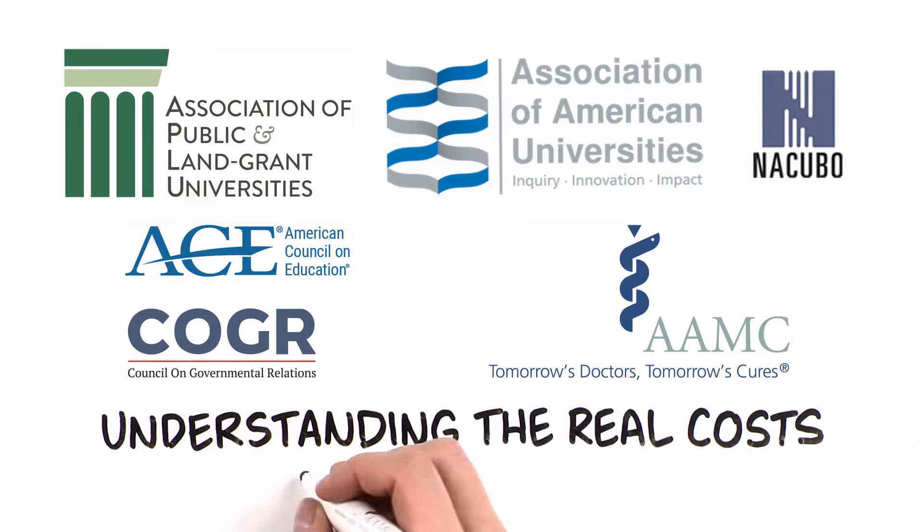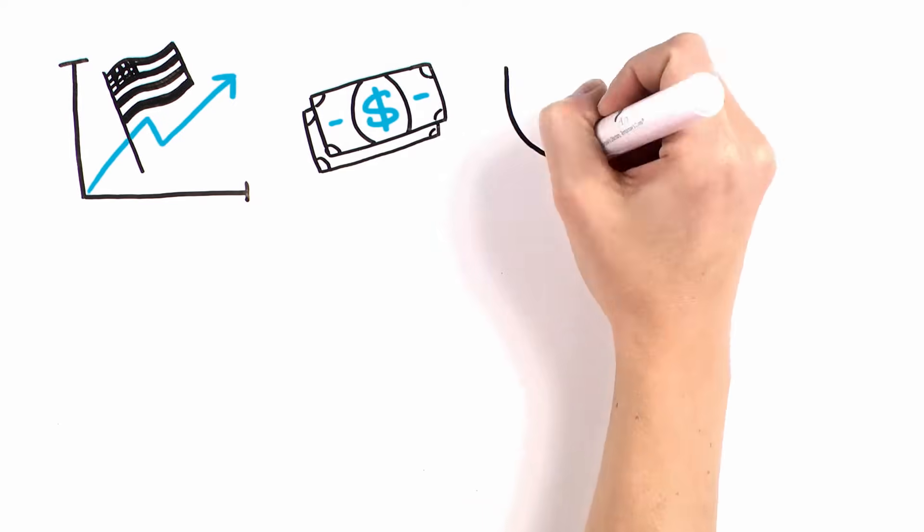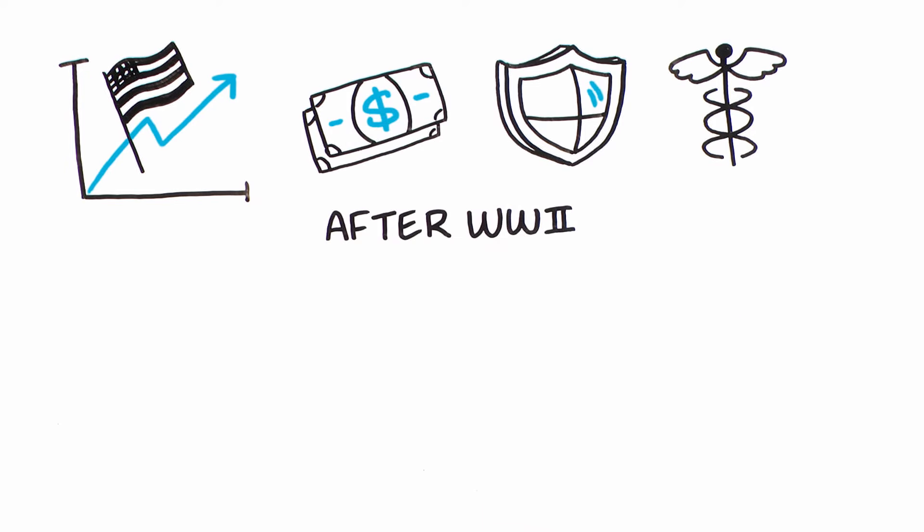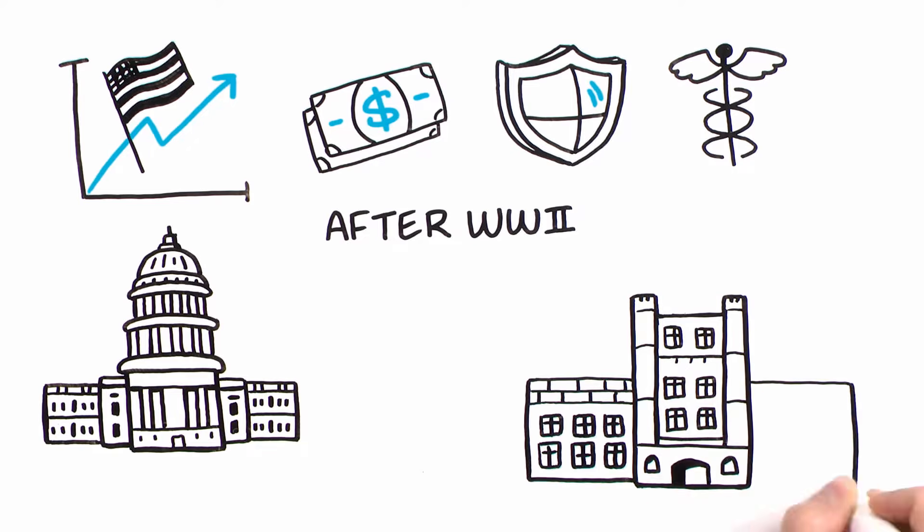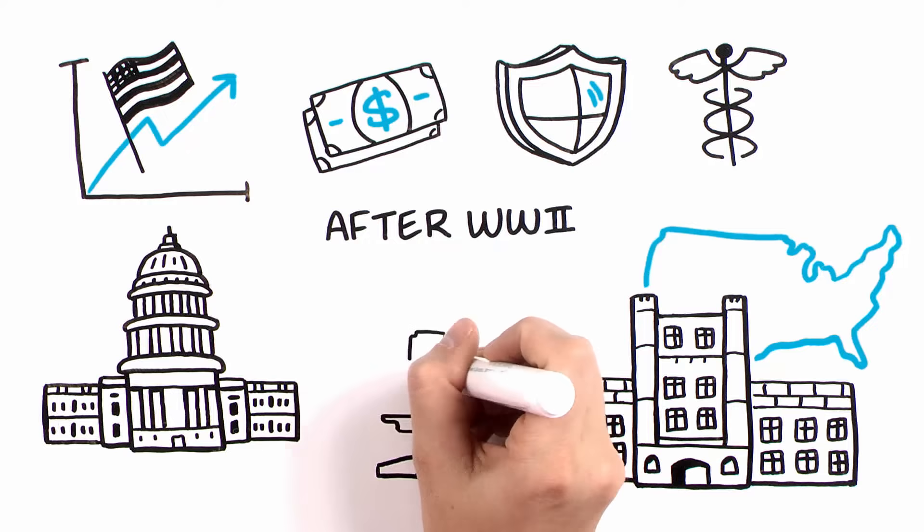Understanding the Real Costs of Research, a focus on facilities and administrative costs. To advance our nation's economy, security, and health after World War II, the federal government decided to partner with colleges and universities across the country to conduct research on behalf of the government.